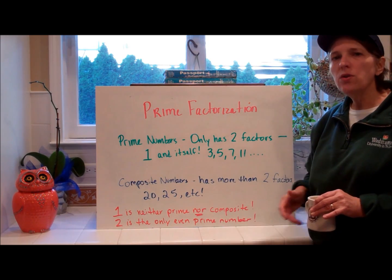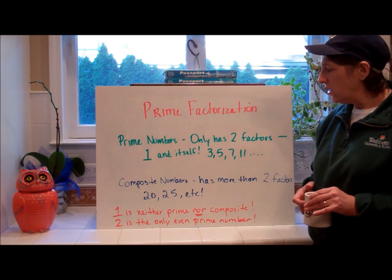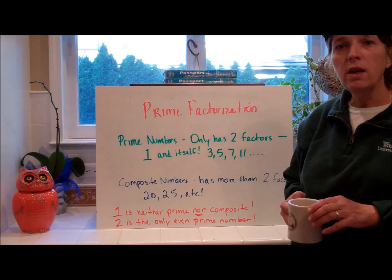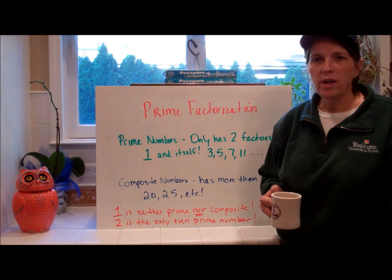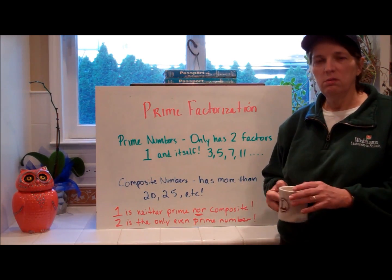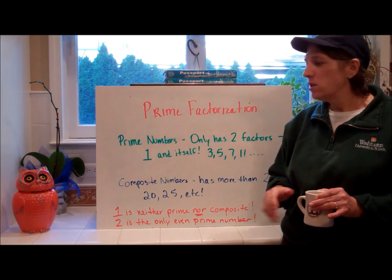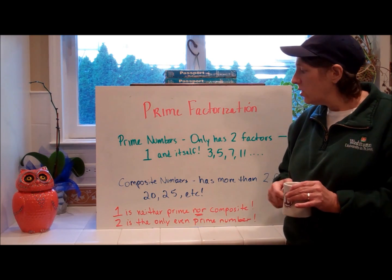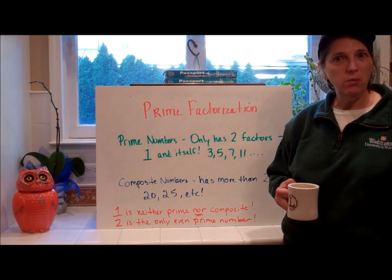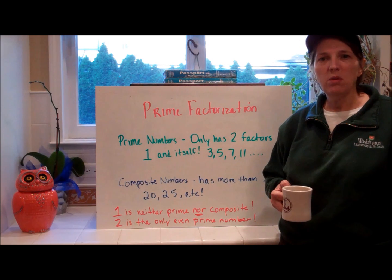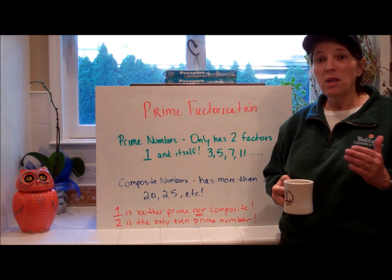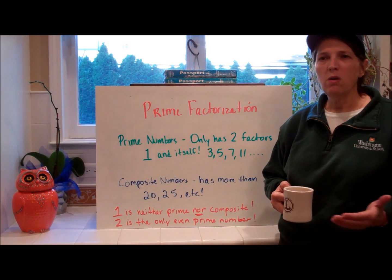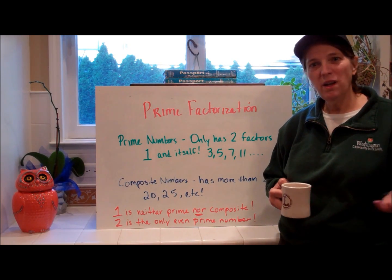There are two numbers that are extremely unique. One is neither prime nor composite, because of the definition of a prime number — it only has one factor. The factors of one are just one times one, so it doesn't meet the definition of a prime number. One is just one — neither prime nor composite. Two, on the other hand, is the only even prime number. Every other even number is composite because two will go into it. Two is prime because its only factors are one and two. Zero has multiple numbers that multiply to get it — anything times zero is zero.